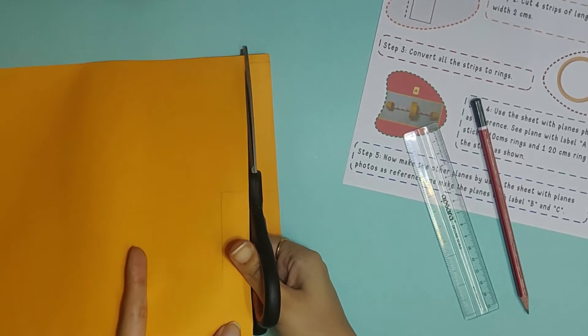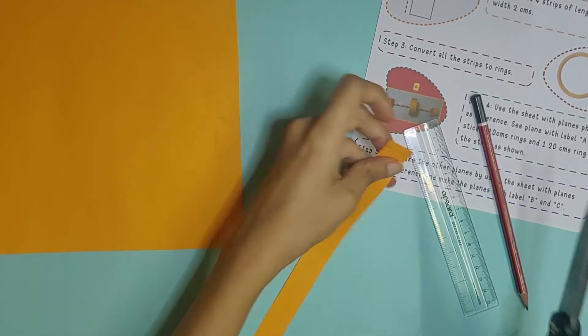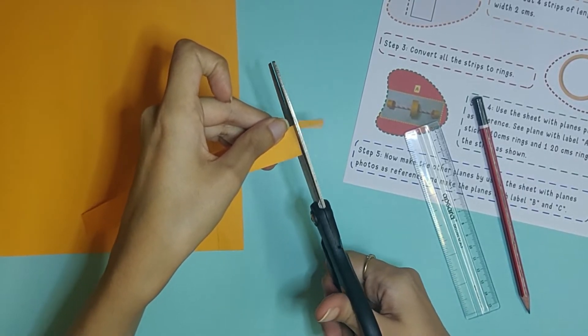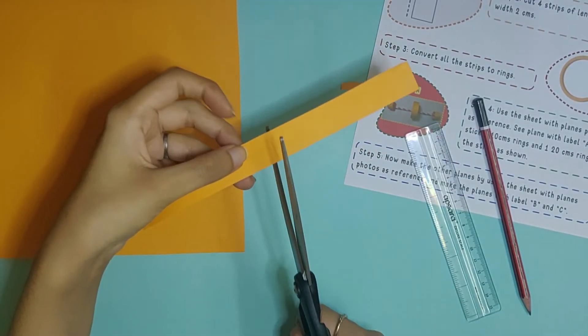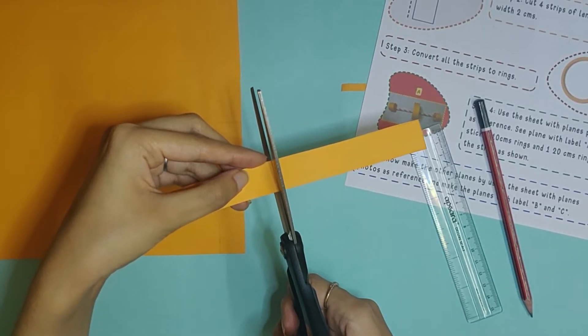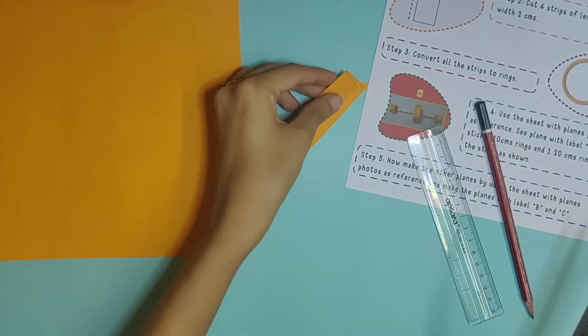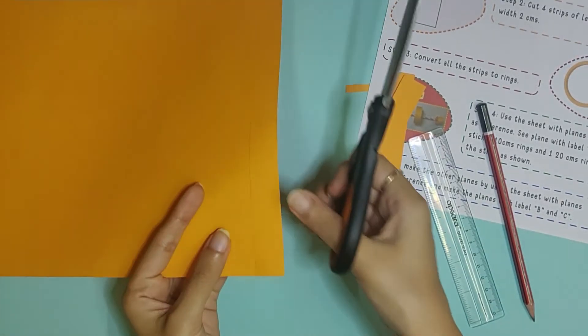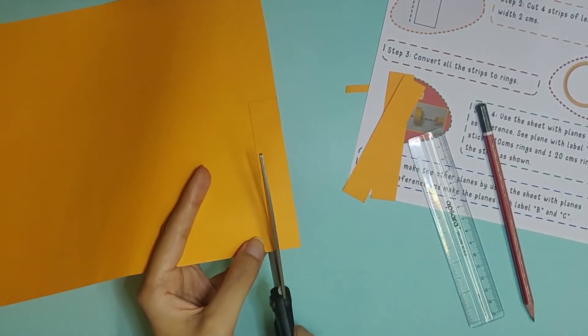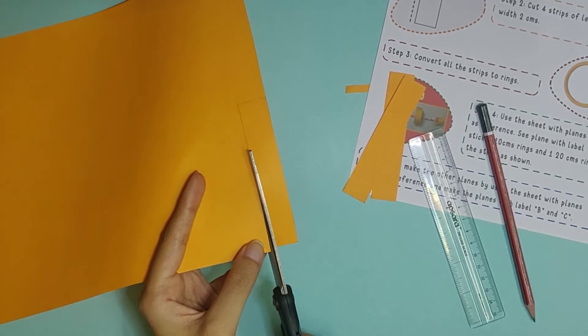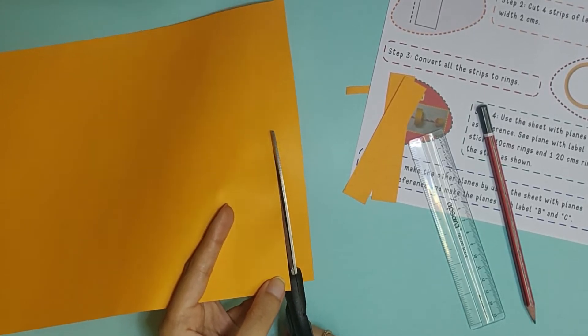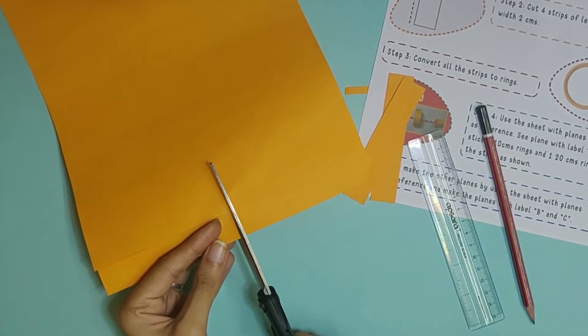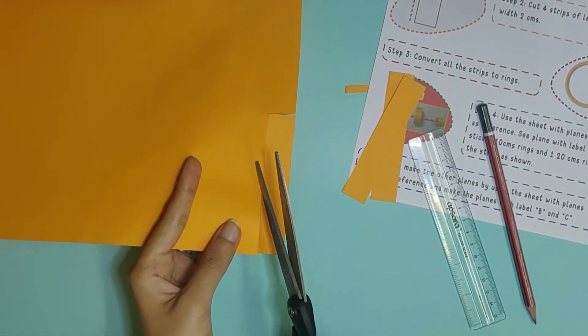You can just extend this line since we already know it's 2. I'm going to cut them now. A little here and there from the line is fine, don't worry.